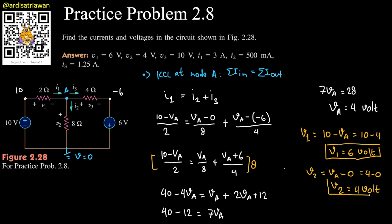And then V3. V3 is the difference between this node and this node, therefore V3 is Va + 6, because minus minus 6. So I'll have 4 + 6, therefore our V3 will be 10 volts.